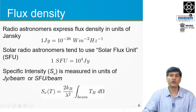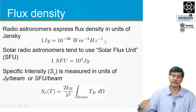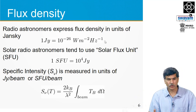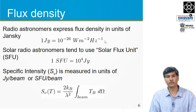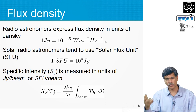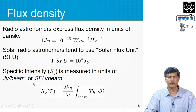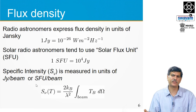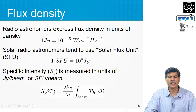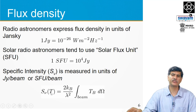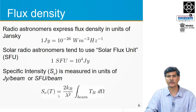Brightness temperature is a surface brightness quantity — whether you get close to or go far away from that object, the surface brightness does not change. Flux density is the brightness integrated over solid angle. Radio astronomers express flux density in units of Jansky, where 1 Jansky equals 10 to the power minus 26 watts per meter squared per hertz. Because the sun is so much brighter than a typical radio source, solar astronomers use a different unit called the solar flux unit or SFU, where 1 SFU equals 10,000 Janskys.